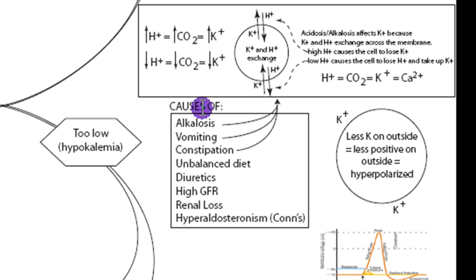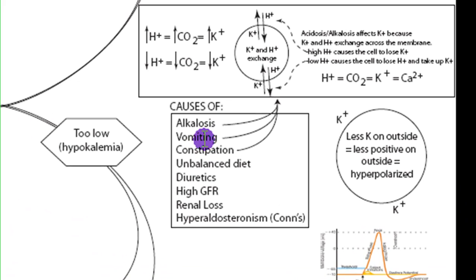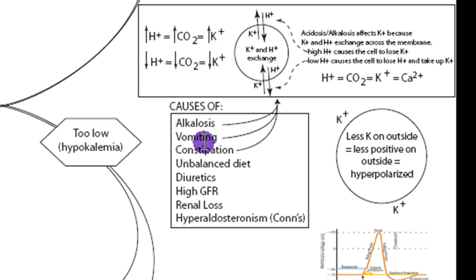Alkalosis affects potassium and also affects CO2 and calcium. That's also why vomiting and constipation cause hypokalemia — each causes alkalosis. Vomiting causes a pool of acid to be lost, which no longer balances the basic small intestine, making you basic. In constipation, digestive material moves through the GI tract slowly, allowing too much time to absorb bicarbonate, which is basic — and absorbing that extra base leads to hypokalemia.